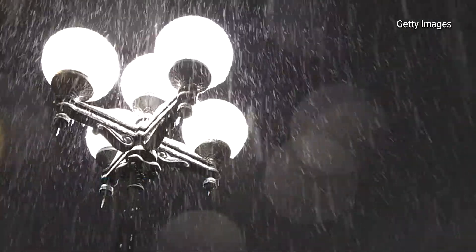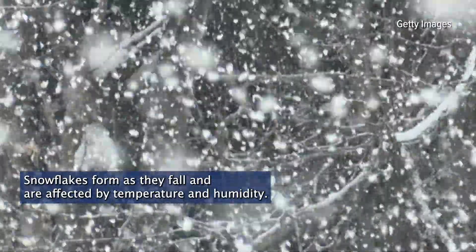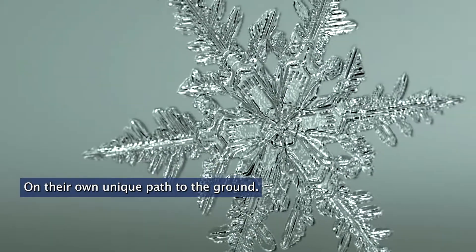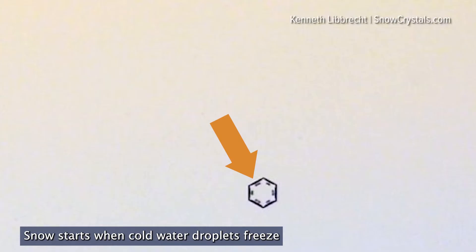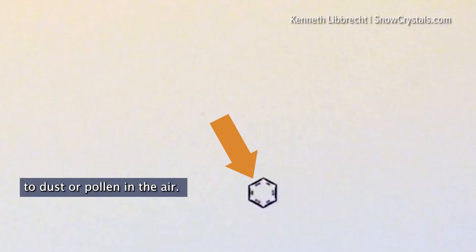Why is every snowflake unique? Snowflakes form as they fall and are affected by temperature and humidity on their own unique path to the ground. Snow starts when cold water droplets freeze to dust or pollen in the air.